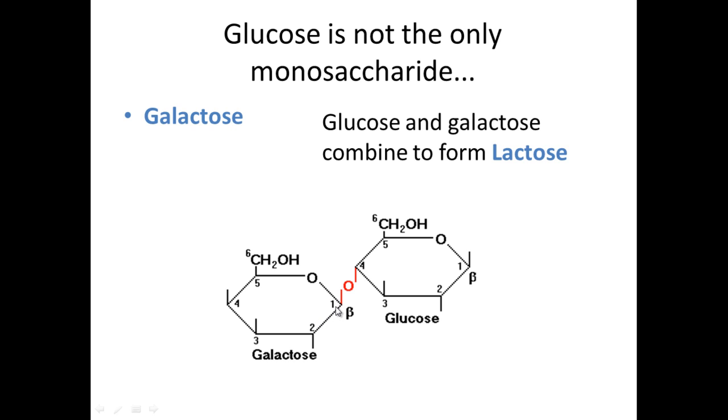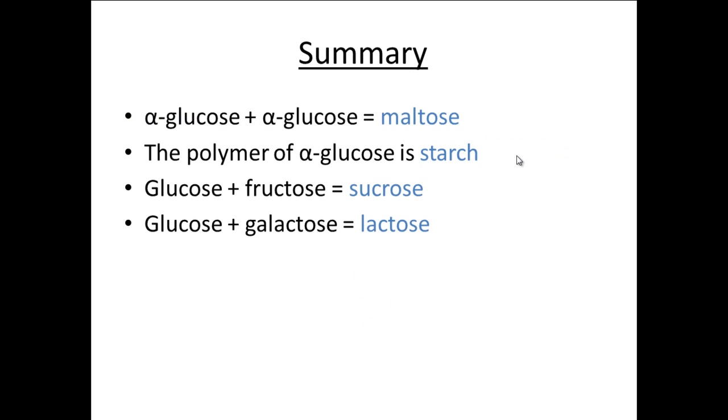In summary, two alpha glucoses joined together form the disaccharide maltose. The polymer of alpha glucose is starch, which we'll come on and look at in the next video.